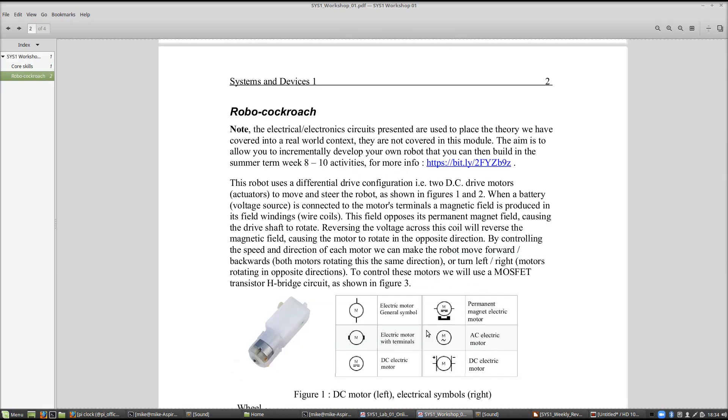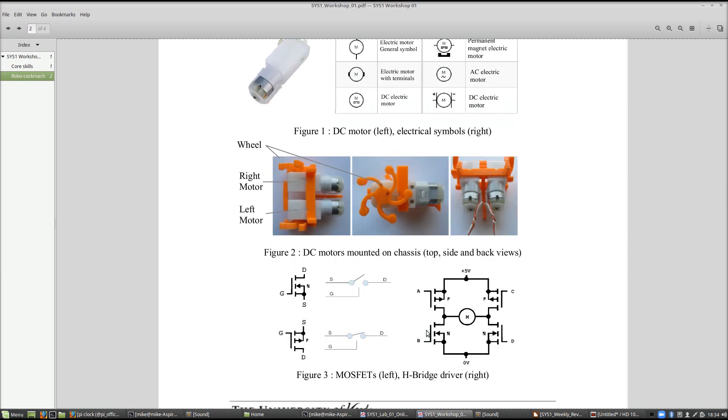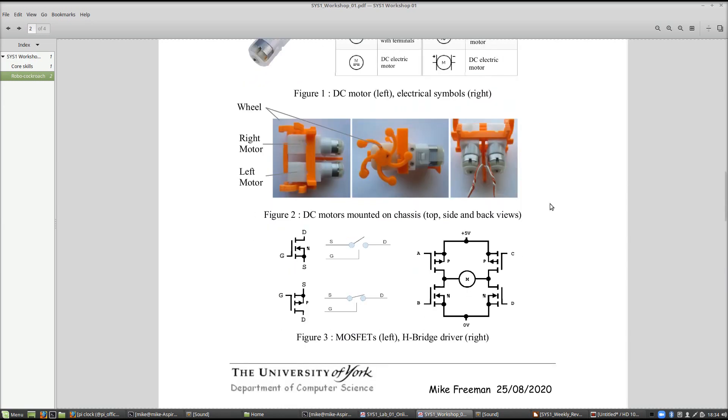In the next section we start to look about how we can take those ideas, those core skills, and apply them to a real-world problem. Here we're going to build our robot cockroach. Now we're going to start to think how we can use those boolean logic gates to control real-world things. The best one we can look at is an H-bridge.